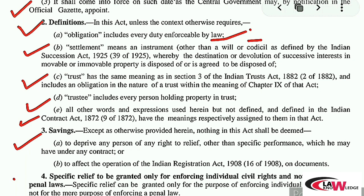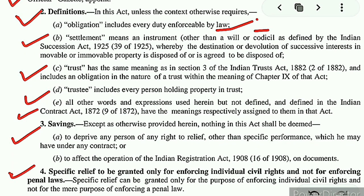Section 3 is the saving clause — we can skip it for now and will better understand it when we study it in connection with some other section under the SRA. Then comes the important Section 4, which says: specific relief is to be granted only for enforcing individual civil rights and not for enforcing penal laws. This means the Specific Relief Act is a civil law in nature and can only be used for enforcing individual civil rights, not for penal matters.